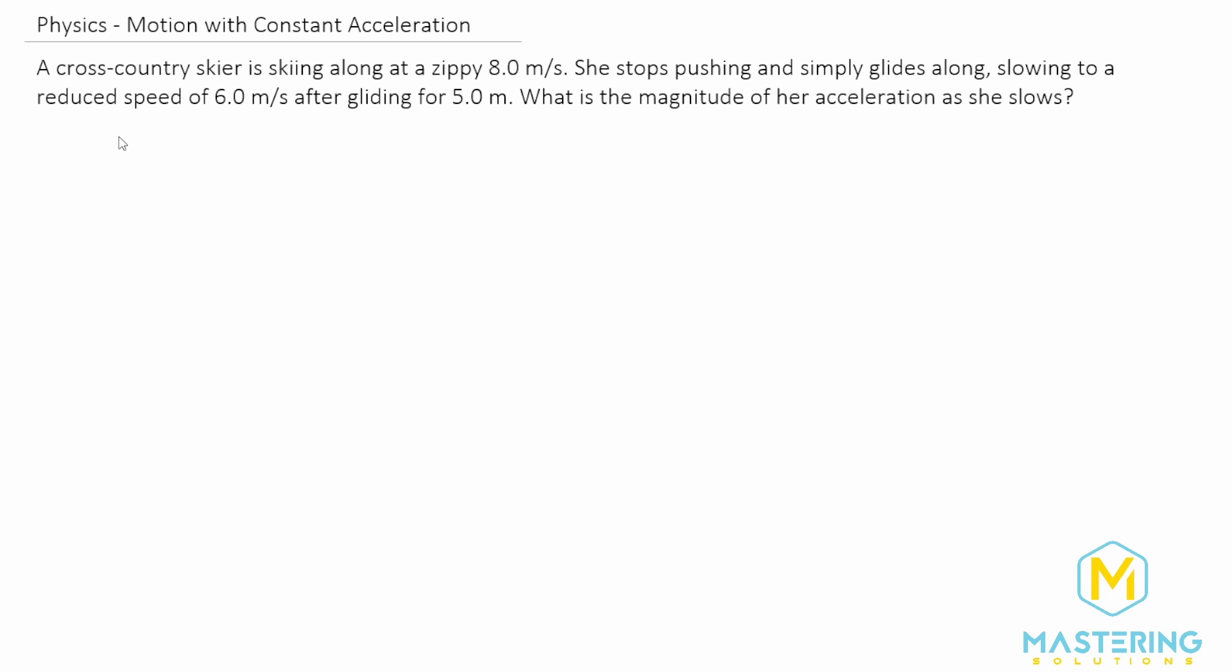So they tell us that the initial velocity is 8 meters per second. Then they say that she slows down to a reduced speed of 6 meters per second. So we'll say that's the final velocity, 6 meters per second, after going for 5 meters. So the delta x is equal to 5 meters.